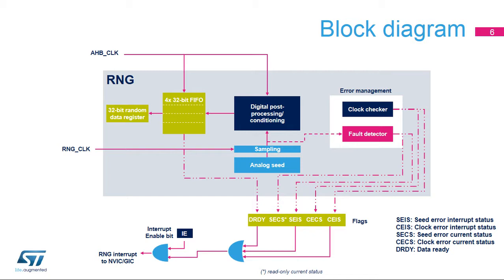The contents of the post-processing block are transferred into the data register through a four-word FIFO. The Data Ready flag, or DRDY, is triggered as soon as the FIFO is full and is automatically reset when no more data can be read back from the RNG. In parallel, an error management block verifies the correct seed behavior and the frequency of the RNG source clock.